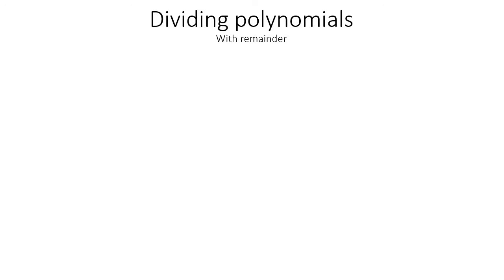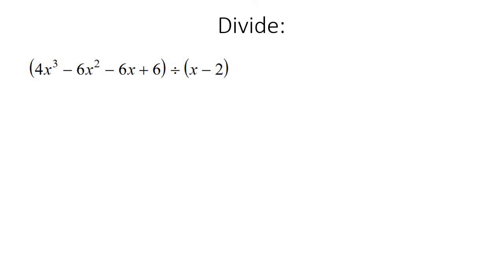In this lesson, we're going to be dividing polynomials, but unlike in the previous lesson where we had no remainders, in this lesson we will have a remainder. The process that we follow is exactly the same, but at the end we'll just be left with something a little bit different. We're not going to be using synthetic division in this lesson, but we will be doing that in one of the next few lessons.